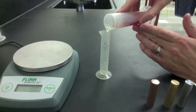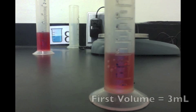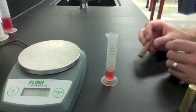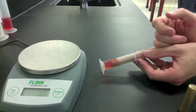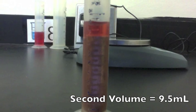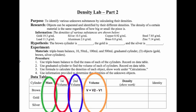To find the volume, we need to put some water into this graduated cylinder. The first volume is 3 milliliters — place that on your data table under first volume. Very carefully, place the object into the graduated cylinder without spilling any water. Then take your second volume. The second volume is 9.5 milliliters — put that on your data table. The volume of the object is the second volume minus the first volume. Don't forget your unit: milliliters.